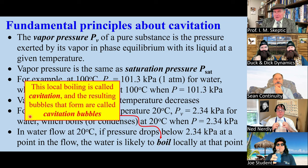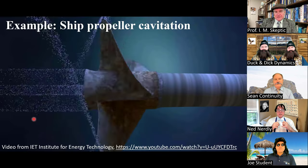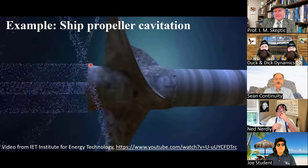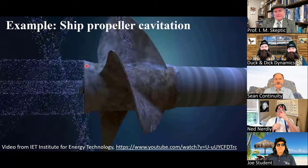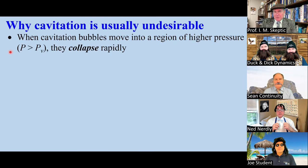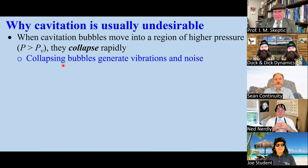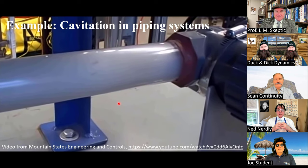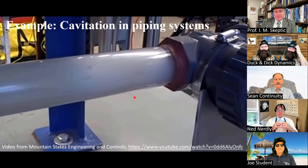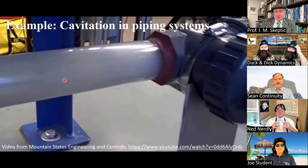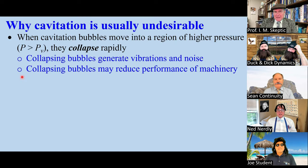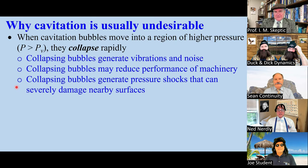The bubbles that are formed are called cavitation bubbles. Here's an example of ship propeller cavitation. Cavitation is usually undesirable because when these bubbles move into a region of higher pressure, they collapse rapidly. These collapsing bubbles generate vibrations and noise. Here's an example of cavitation in a pipe — you can both see the bubbles and hear them. These collapsing bubbles may reduce performance and can severely damage nearby surfaces.